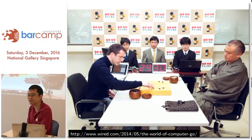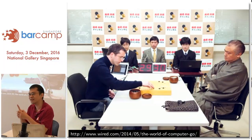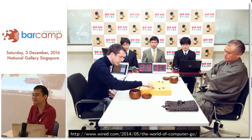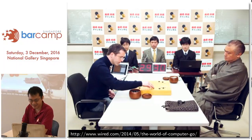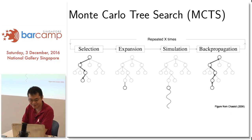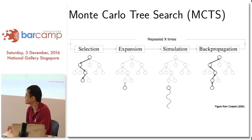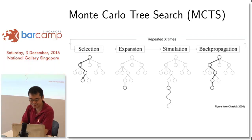They asked him when he thought they could win without any handicap. Even just removing one stone — going from four to three stone handicap — was a big jump at that time. The real breakthrough was something called Monte Carlo Tree Search, invented by Remy himself back in 2007, which is also what AlphaGo uses.